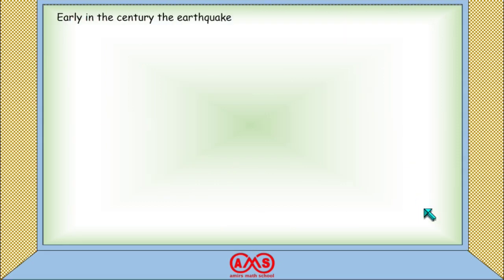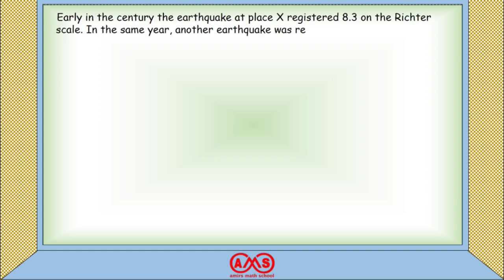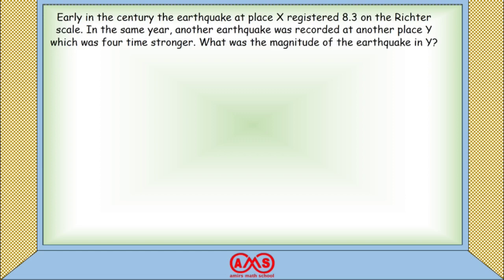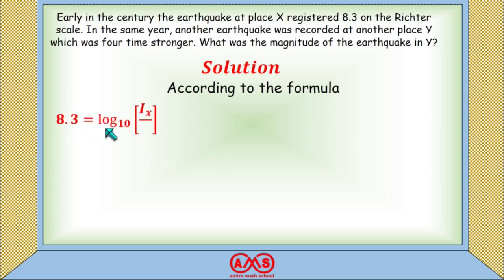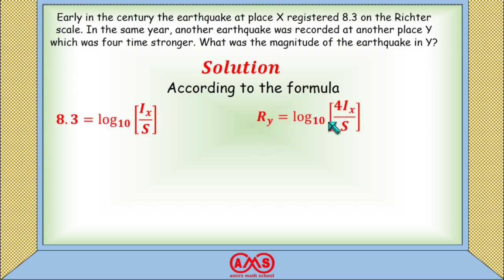Early in the century, the earthquake at place X registered 8.3 on the Richter scale. In the same year, another earthquake was recorded at place Y, which was 4 times stronger. What was the magnitude at Y? According to the formula, 8.3 = log₁₀(I_X / S), where I_X is the intensity at X. For Y, R_Y = log₁₀(4·I_X / S), since the earthquake at Y is 4 times stronger than I_X.